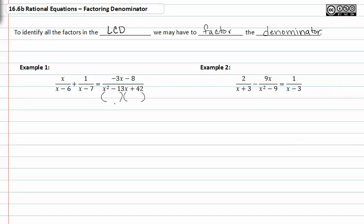It's just something to keep in mind. This factors to x minus six, x minus seven. Look at that, it does match the other two denominators. So our LCD for this example is going to be x minus six, x minus seven.